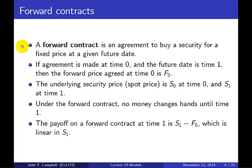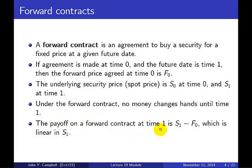Focusing on forward contracts: what is a forward contract? It's an agreement to buy a security for a fixed price at a given future date. You should recall when we discussed forward rates in the term structure of interest rates, we were discussing such an agreement where it was a fixed income security. Now we're going to consider general securities. If the agreement is made at time zero and the future date is time one, we write the forward price agreed at time zero as F0. The underlying security's spot price is S0 at time zero and S1 at time one. Under the terms of the forward contract, no money changes hands until time one, and the payoff is S1 minus F0 — linear in S1. You get a security worth S1, you pay F0 for it, so the profit is S1 minus F0.